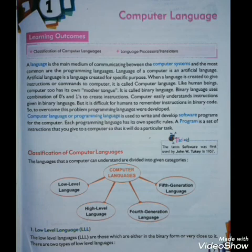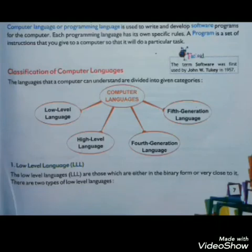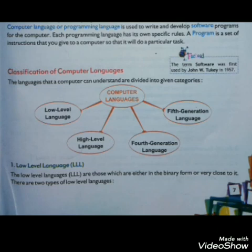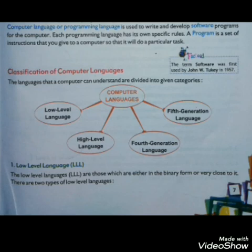Computer language or programming language is used to write and develop software programs for the computer. Each programming language has its own specific rules. A program is a set of instructions that we give to a computer so that it will do a particular task.